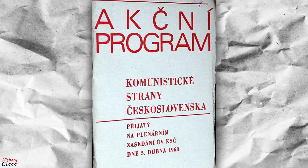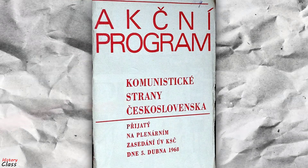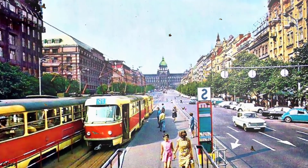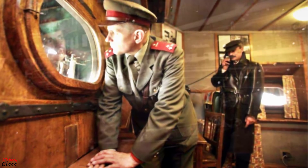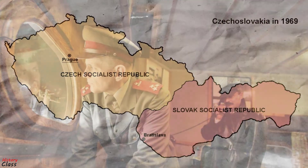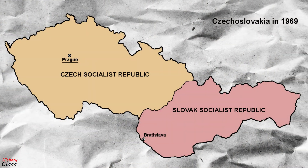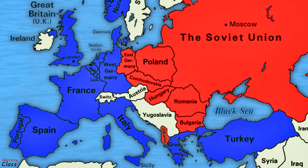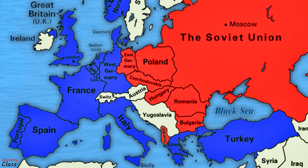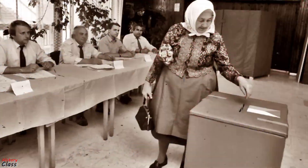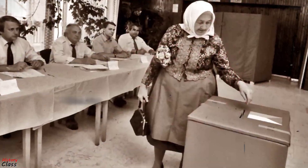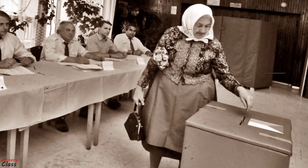In April, Dubček launched an action program of liberalizations, which included increasing freedom of the press, freedom of speech, and freedom of movement, with economic emphasis on consumer goods and the possibility of a multi-party government. It would limit the power of the secret police and provide for the federalization of Czechoslovakia into two equal nations. The program also covered foreign policy, including maintenance of good relations with Western countries and cooperation with the Soviet Union and other Eastern Bloc nations. It spoke of a ten-year transition through which democratic elections would be made possible and a new form of democratic socialism would replace the status quo.